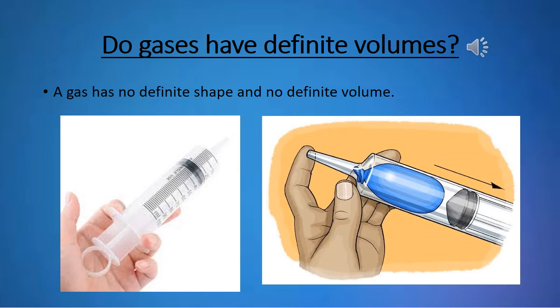A solid has a definite shape and a definite volume. A liquid has a definite volume but no definite shape.